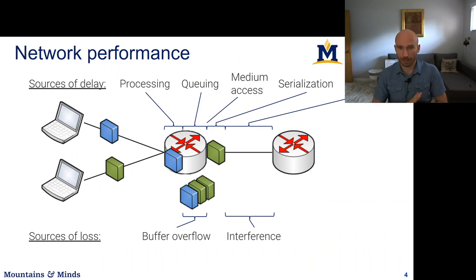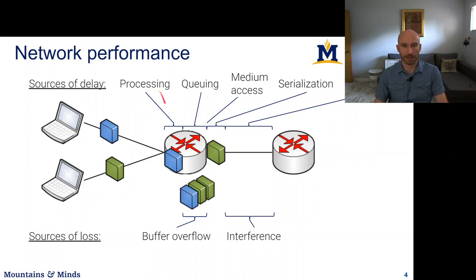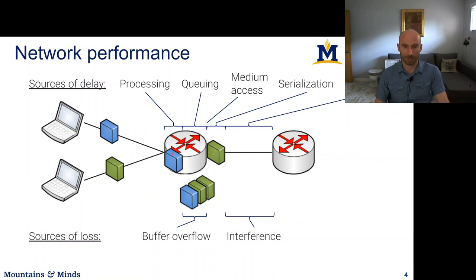Now let's talk about network performance. We want data to be sent quickly end-to-end — to reach the destination as fast as possible. There are things in a packet-switched network that introduce delay. The first source is packet processing: a packet arrives at a router and the router must parse it to figure out where it needs to go — for example, making a routing decision about whether to forward it left or right.